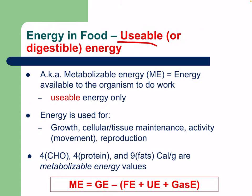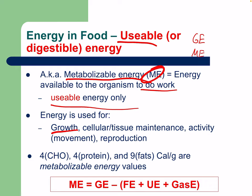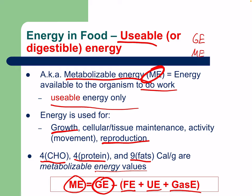The usable energy is our metabolizable energy (ME). ME is the energy available to the organism to do work — it is used for growth, cellular and tissue maintenance, activity or movement, and reproduction. The values are four calories from carbohydrates, four from protein, nine from fats, and seven from alcohol. Metabolizable energy equals gross energy minus fecal, urinary, and gaseous energy.